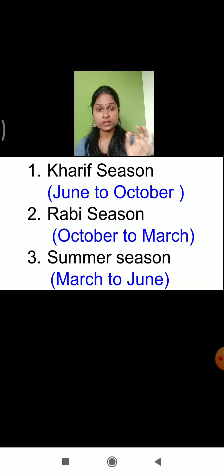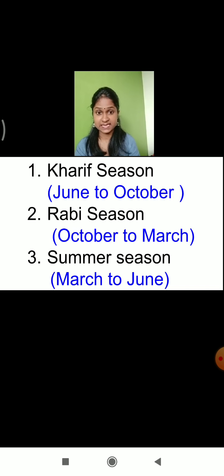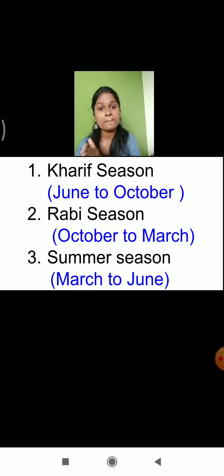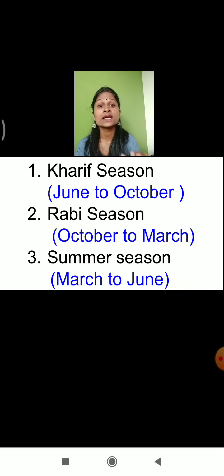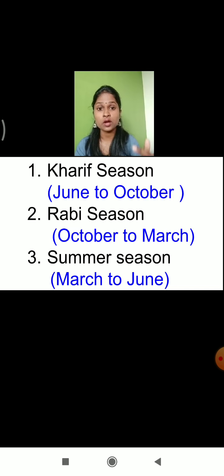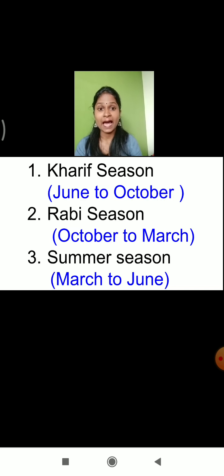What is the meaning of the Summer season? The season which starts from March to June, we call it as Summer season. Now you understood all the 3 definitions in detail.